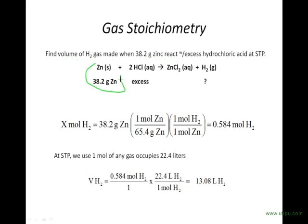So we're starting with 38.2 grams of zinc reacting with excess hydrochloric acid, meaning we don't have to worry about being limited by the amount of hydrochloric acid we have. And we want to know how much hydrogen gas this will make.